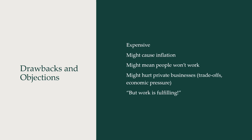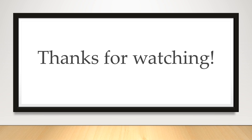Drawbacks and objections to basic income include: it's expensive, it might cause inflation, and it might mean people won't work — that if people have even a relatively small guaranteed income, they might decide not to work, thus hurting private businesses. Some also argue that work is fulfilling and we should encourage people to participate in it. Advocates respond that these concerns are surmountable — a basic income might provide at a survival level, but not enough that most people would stop working. People might work different jobs, or take time off to care for a family member and then return. Those are the key concepts in the resolution. Thanks for watching, and have a great season of debating.